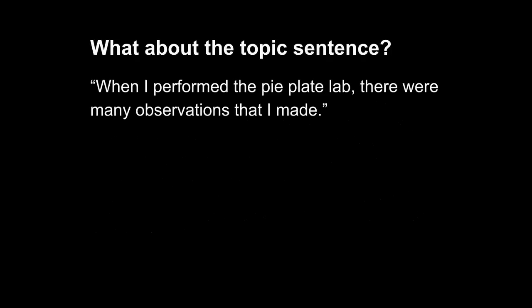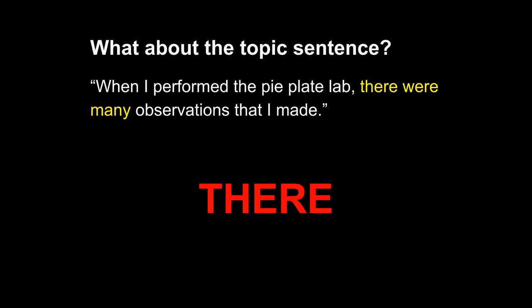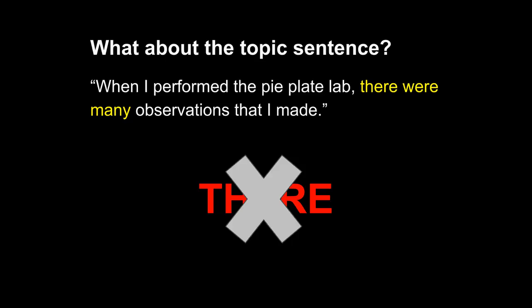Let's ask about the topic sentence: When I performed the pie plate lab, there were many observations that I made. This is unfortunately vague. Unlike the first student answer we examined, this student answer suffers from using the word there. There were many observations that I made does not indicate the nature of the observations or the specific cause and effect process under discussion. In fact, using the word there is often an indication that you are writing a vague or ineffective sentence. Remove it from your writing. Until you can master using the word there to create effective sentences, simply avoid it. This student would be well served by not using the word there in his topic sentence.